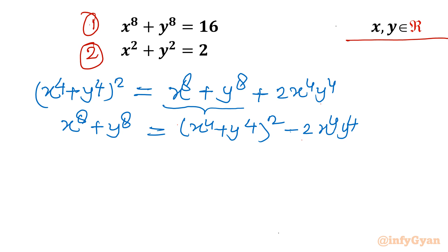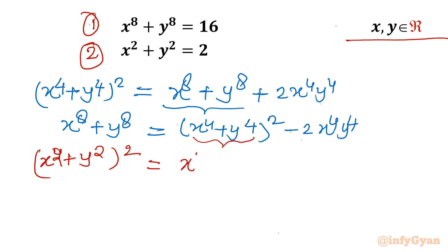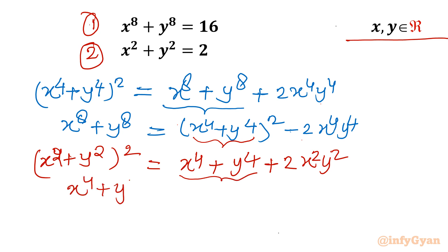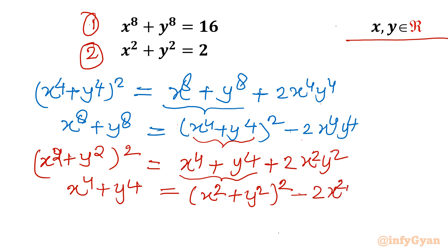Now we also need x⁴ + y⁴. Using the identity (x² + y²)² = x⁴ + y⁴ + 2x²y², we can rearrange to get x⁴ + y⁴ = (x² + y²)² − 2x²y².